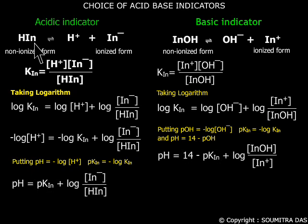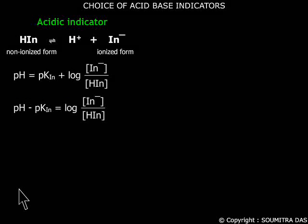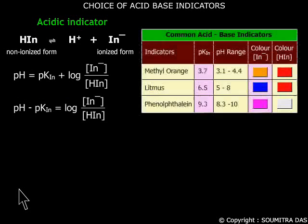So it is obvious that this ratio depends solely on the pH of the medium. For the time being we will take up acidic indicators only, because most common acid-base indicators are weak acids. For acidic indicators in acidic medium, the H+ ion concentration is more and this equilibrium shifts to the left, and the color of the non-ionized form predominates.